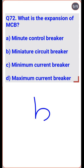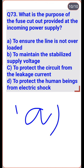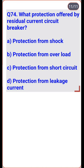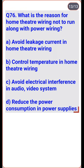MCB stands for Miniature Circuit Breaker — option B. The purpose of the fuse cutout at the incoming power supply is to ensure the line is not overloaded — option A. The RCCB provides protection from electric shock — option A. In the looping system of wiring, the face conductor is looped in at socket connections — option D. Home theater wiring should not run with power wiring to avoid electrical interference in audio and video systems — option C.